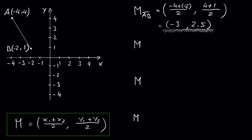So, the midpoint of point A and B is negative 3, comma 2.5.